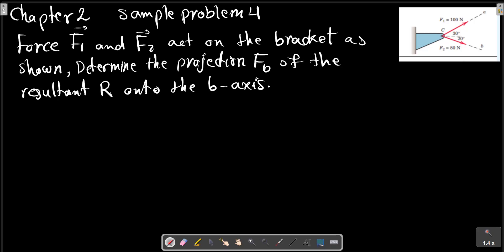Chapter 2, sample problem 4. Force F1 and F2 act on the bracket as shown. Determine the projection FB of the resultant R onto the b-axis as shown in the picture. First, we should obtain the resultant F1 plus F2.